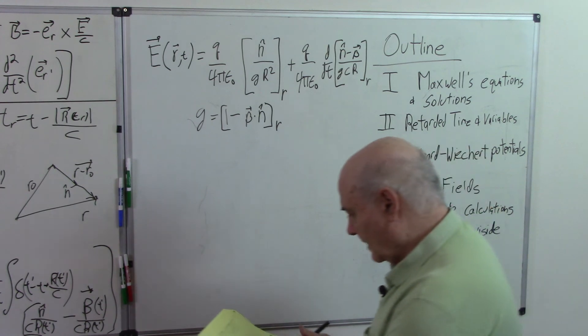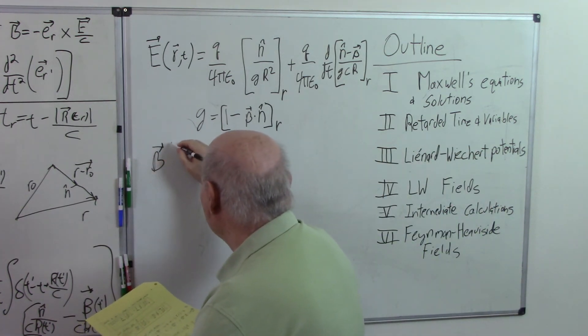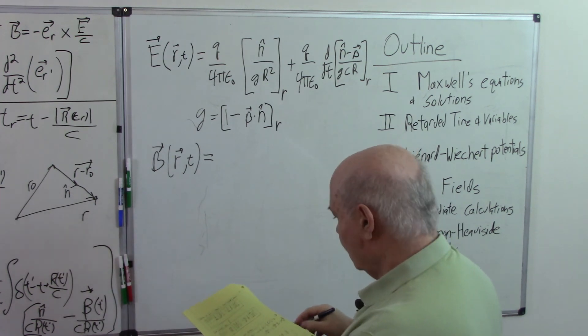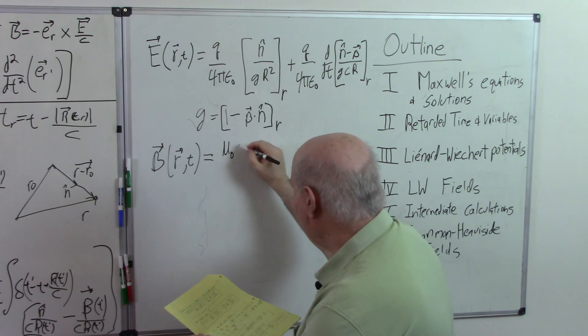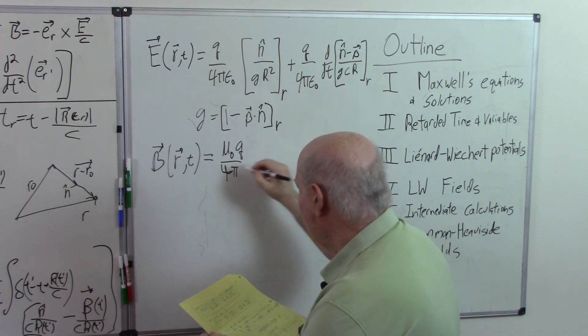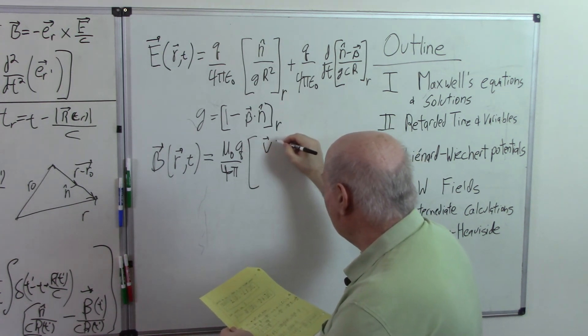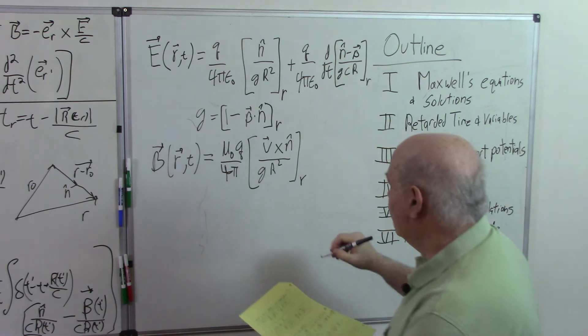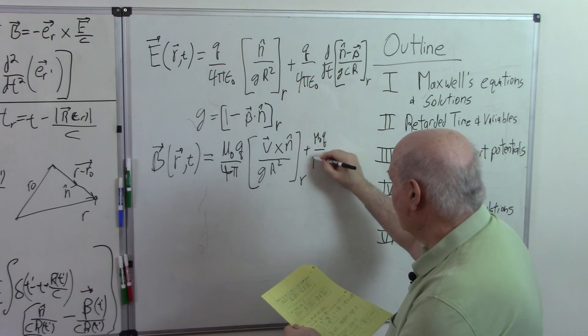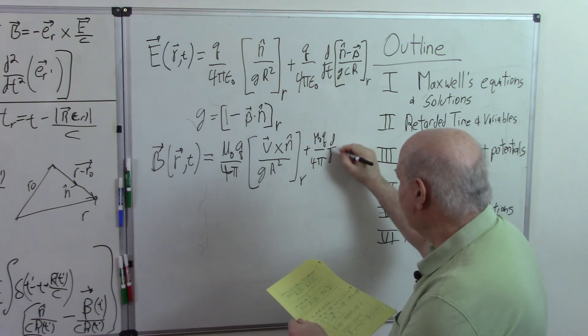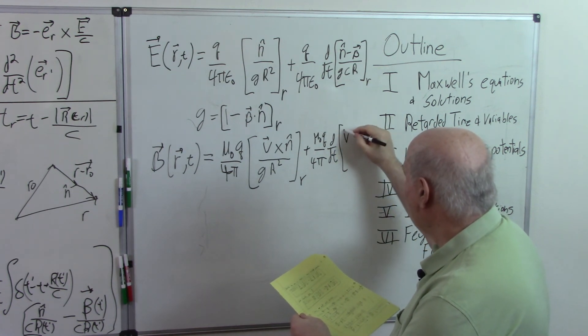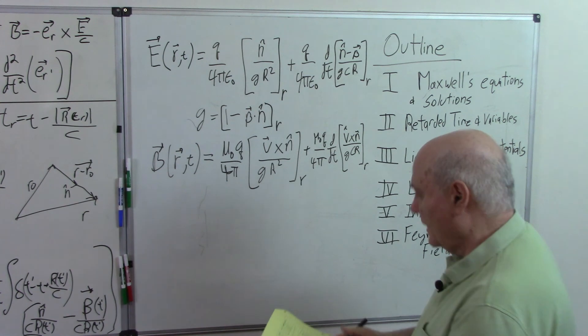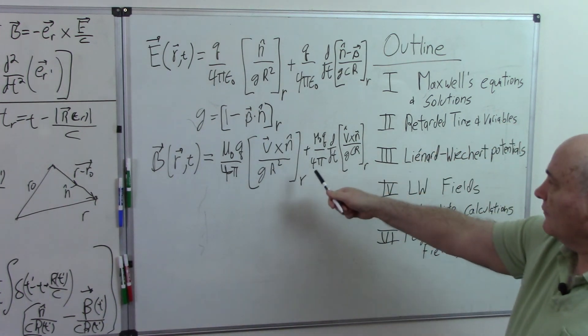And then the magnetic field, B is gotten in the same way. It's a very similar calculation. And I'll write it mu zero q over 4 pi, that's going to be v-carat, the velocity cross n-carat over g r squared. So these are the fields from a moving charged particle.